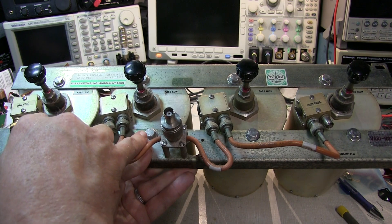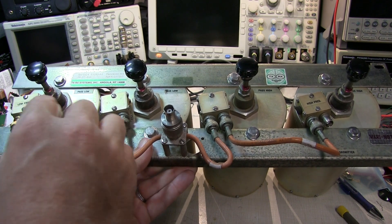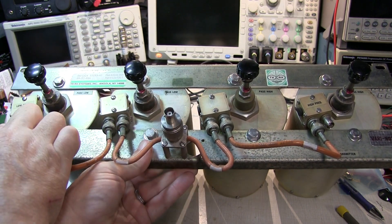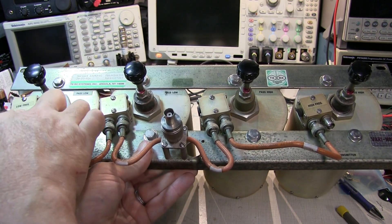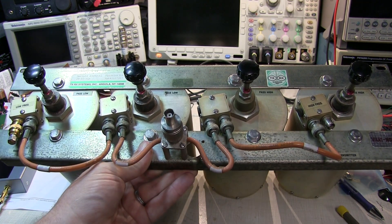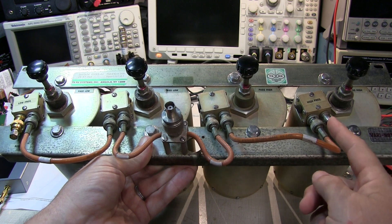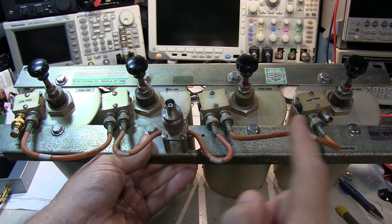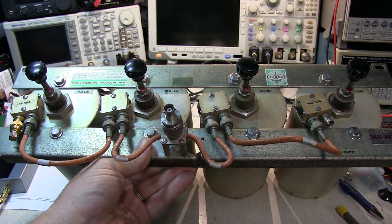On the low frequency receive side, it's the opposite. The bandpass filters pass the signal to the receiver and the notch filters notch out the transmit frequency. This allows the repeater to transmit relatively high power on its transmit frequency while simultaneously receiving on its receive frequency through the same antenna.